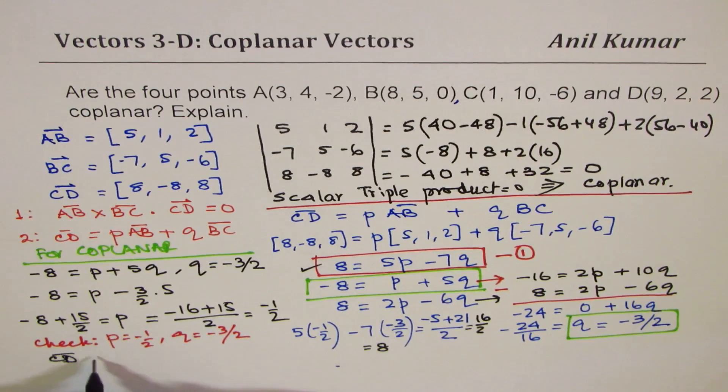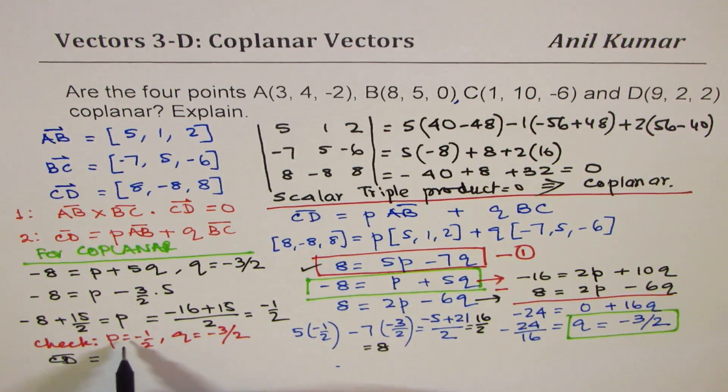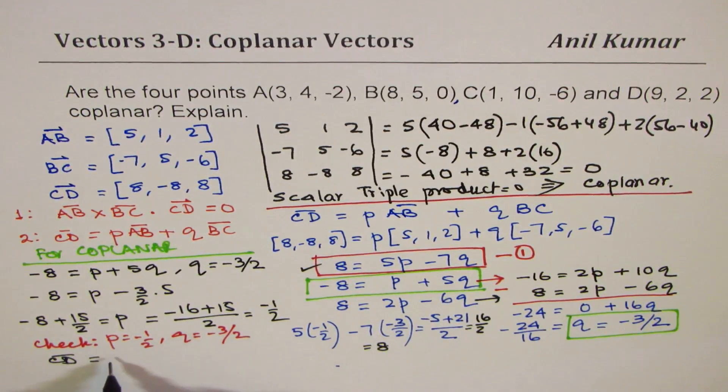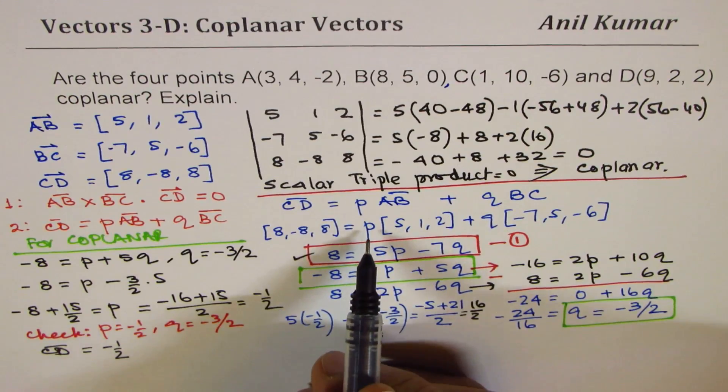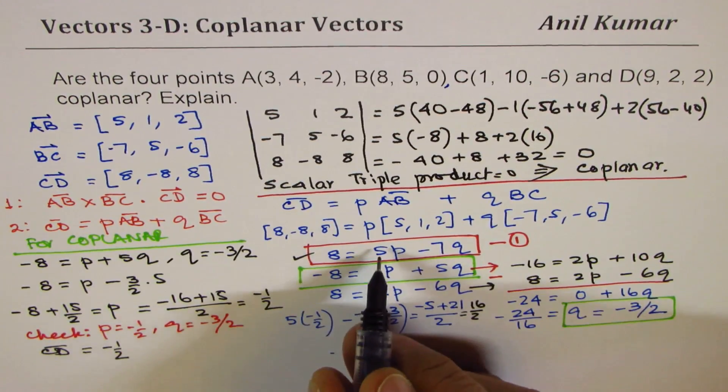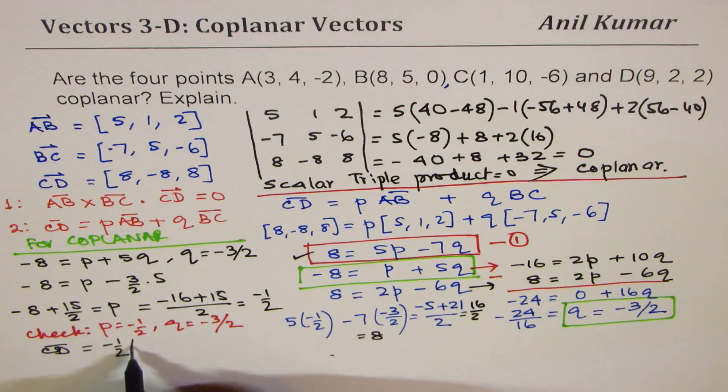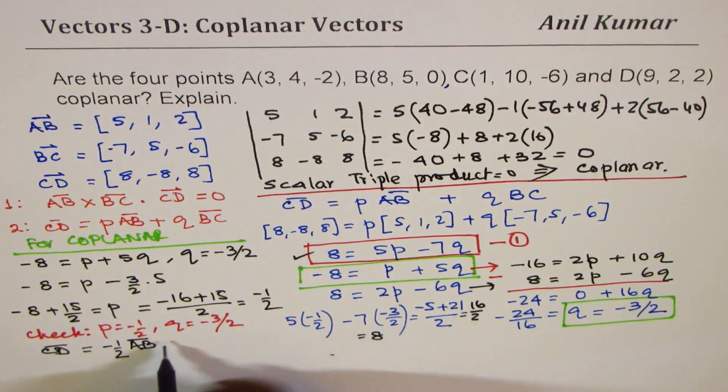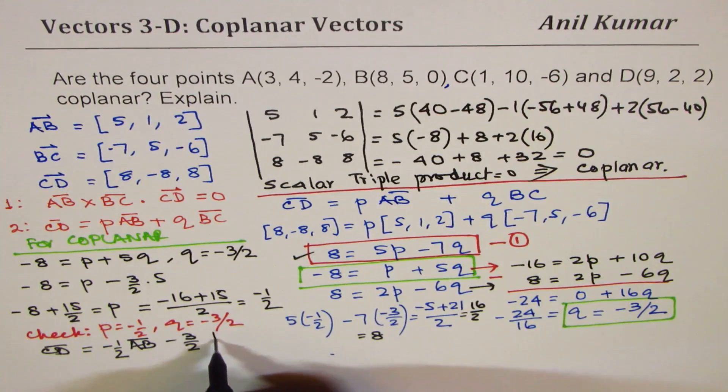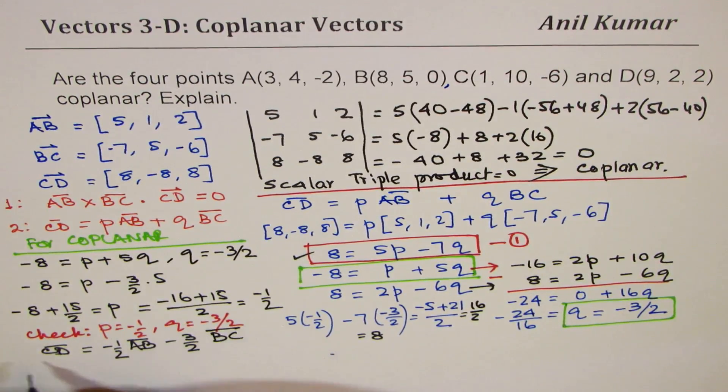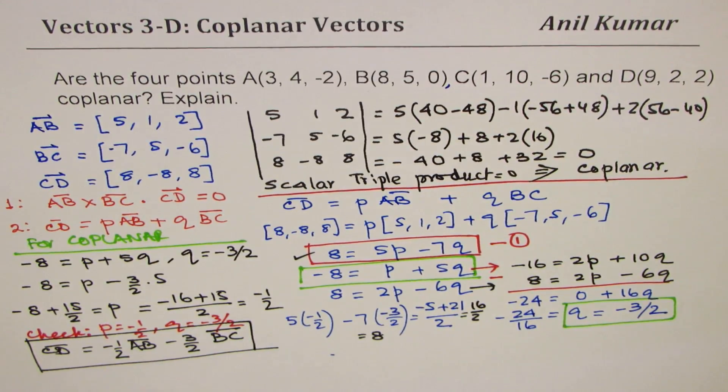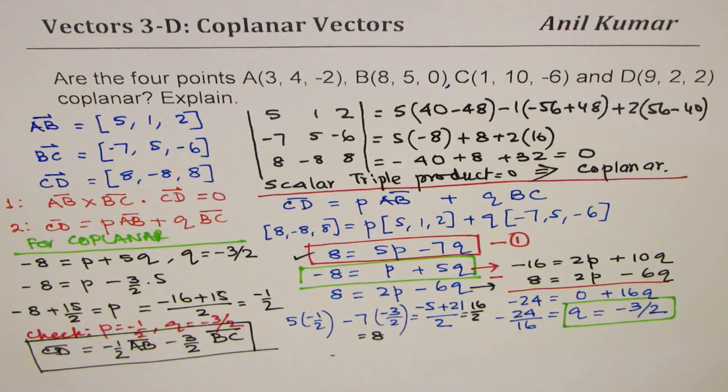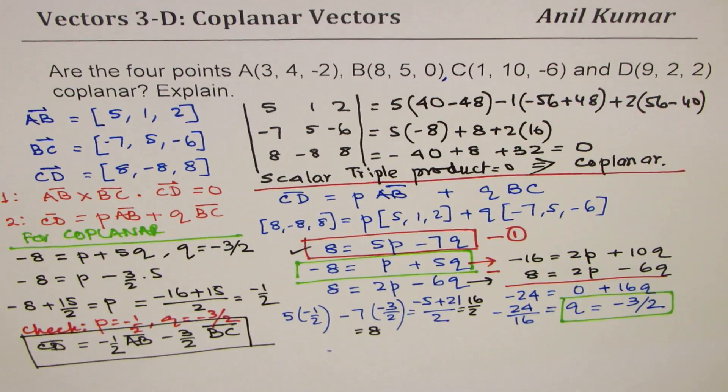Therefore, we could write that CD = -1/2 AB - 3/2 BC. So I have written one vector as a linear combination of the other two. That means they are coplanar. So that is how you would actually show that four points are coplanar.